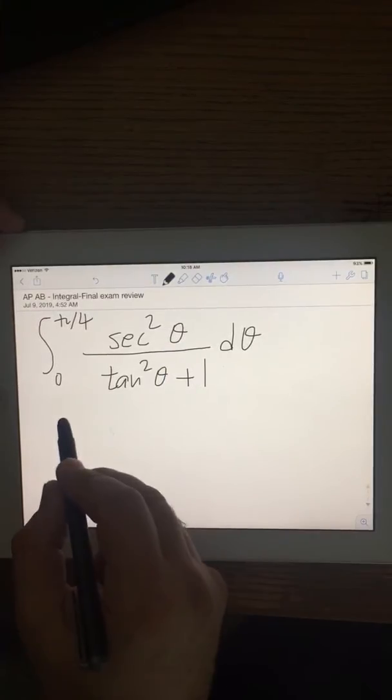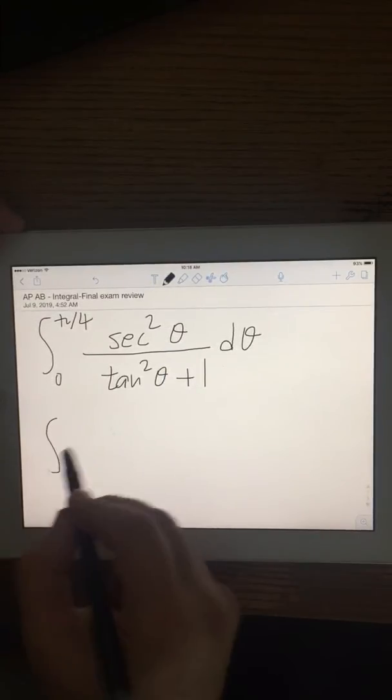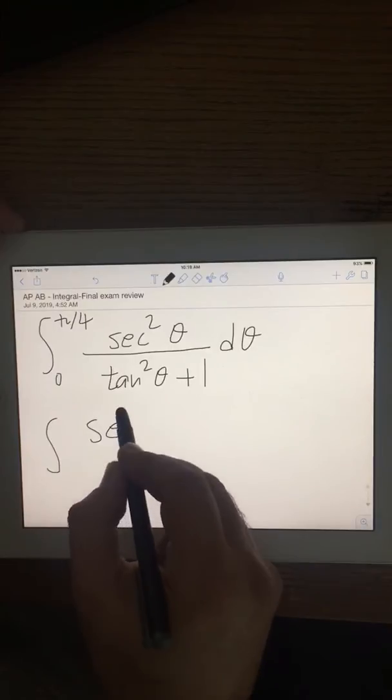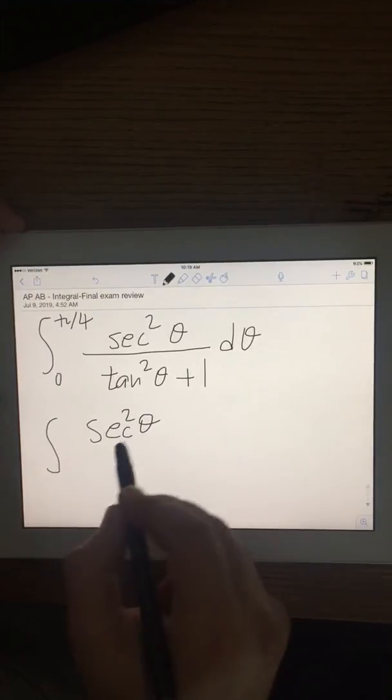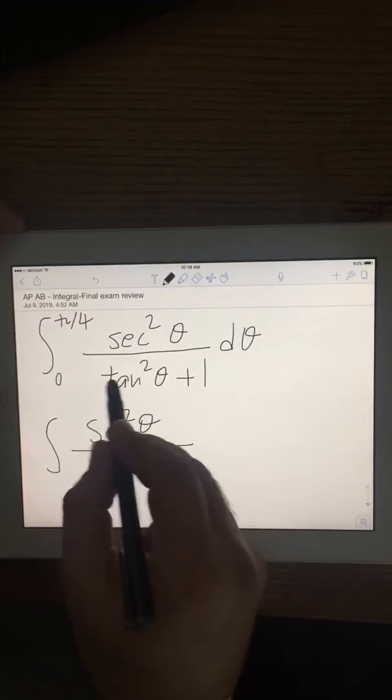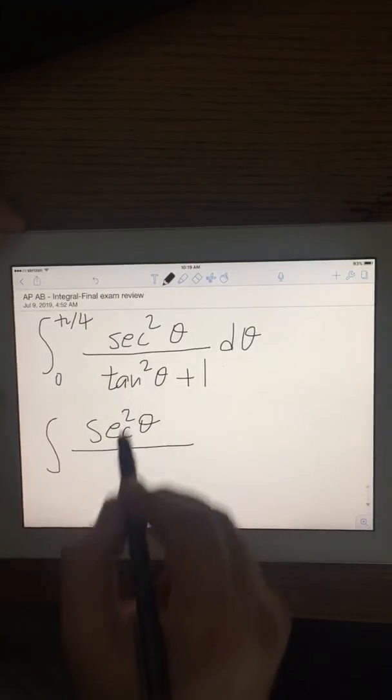Okay, so I can do secant squared over, and 1 plus tangent squared is the same.